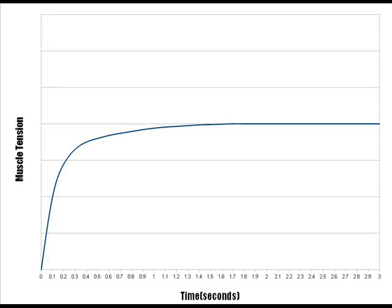Here's what we're looking at: muscular force versus time. The height of the curve on the right shows maximum tension. The path leading up to that shows how fast the tension is generated. A steeper slope on the left indicates a higher rate of force development, aka explosiveness.